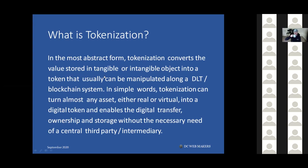Tokenization converts the value stored in tangible and intangible objects into a token that can be manipulated along a distributed ledger or blockchain system. An example of an intangible asset can be a logo, or in the banking industry you can sell your debt. Financial derivatives can also be deemed intangible assets.